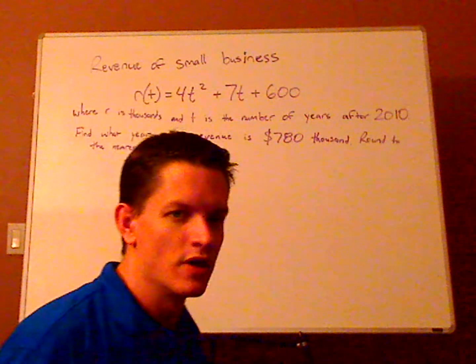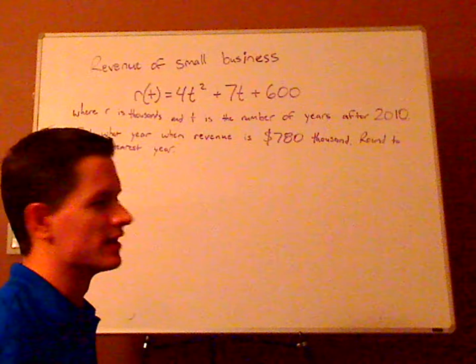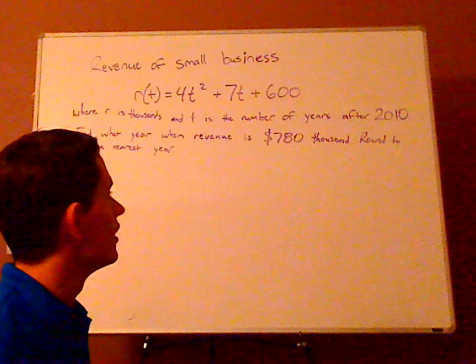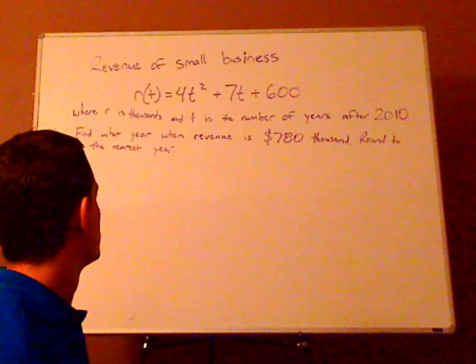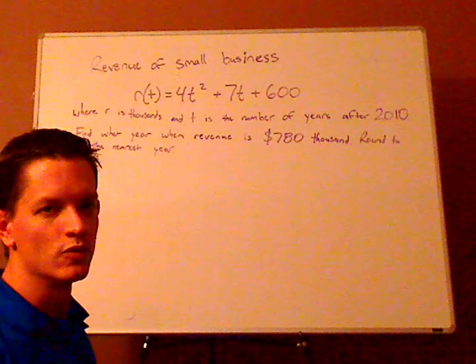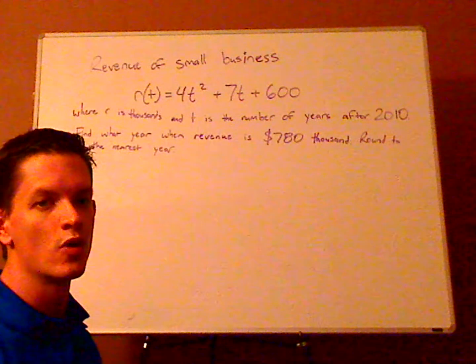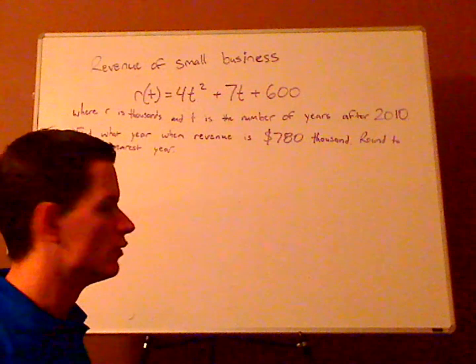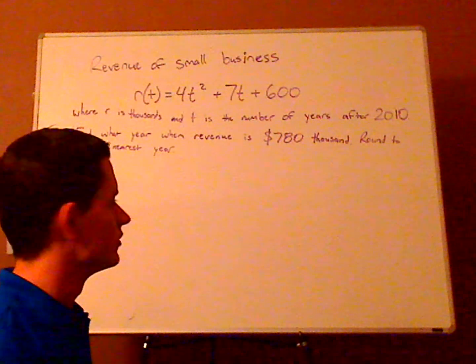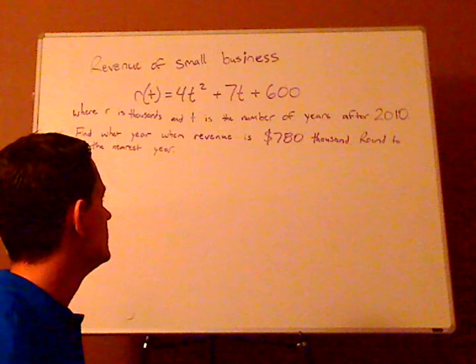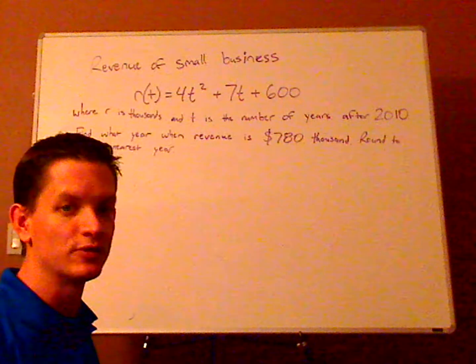Let me read the word problem to you. It's not a complete word problem, just for sake of space. The revenue of a small business is represented by this function: r(t) = 4t² + 7t + 600, where r is revenue in thousands of dollars and t is the number of years after 2010.